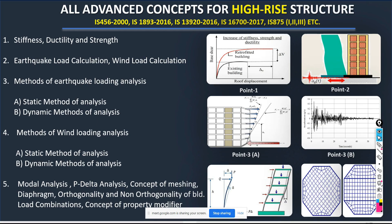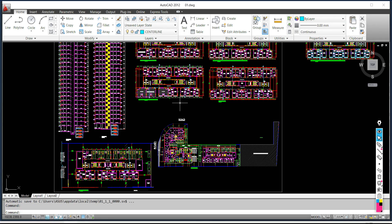In the third section, we are going to cover all the advanced concepts for high-rise structure. This is a 22 to 23 floor high-rise building. If you are going to deal with this kind of structure, only gravitational load will not be enough — you have to assign earthquake loading, wind loading, and many different types of loads over this structure.